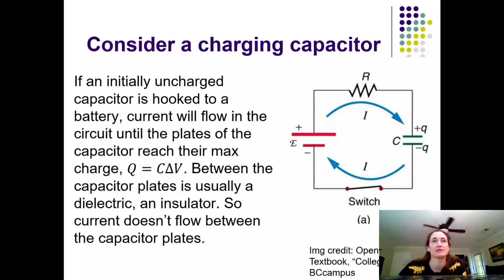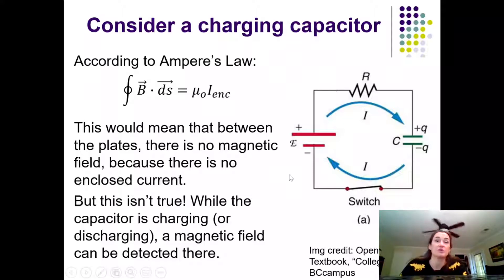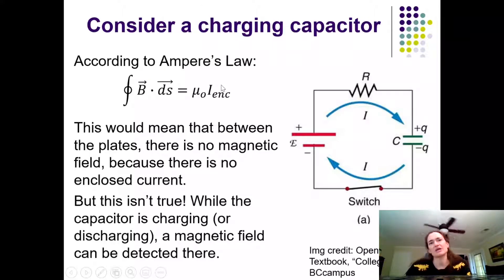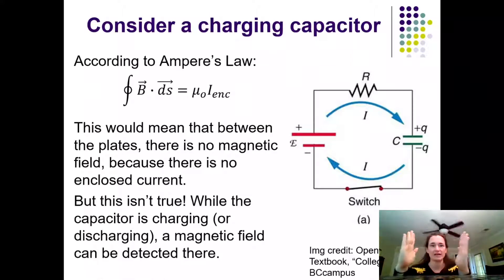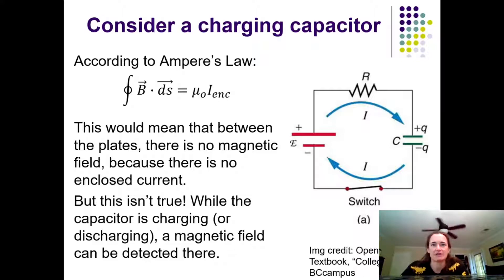According to Ampere's law, the integral of B·ds equals μ₀ times the enclosed current. This would mean there's no magnetic field between the capacitor plates, since an Amperian loop drawn there encloses no current. But this doesn't make sense — there's a magnetic field on both sides of the capacitor plates, and in fact if you put a Hall probe between the plates while charging, you would measure a magnetic field.